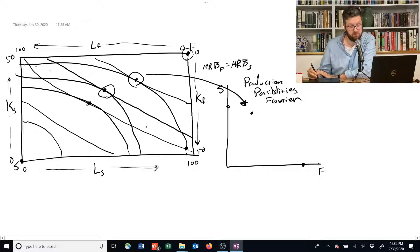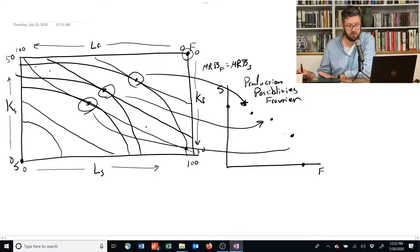Here we're allocating closer to a 50-50 split, so let's say it's somewhere like this. Over here, we're starting to tilt things towards the production of food, so maybe that corresponds to a point like this. We can connect all these up, and we get the production possibilities frontier.